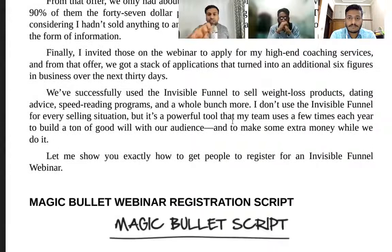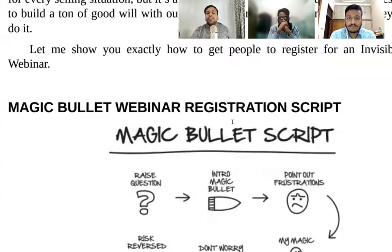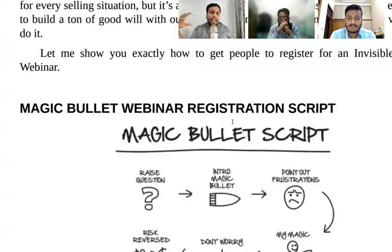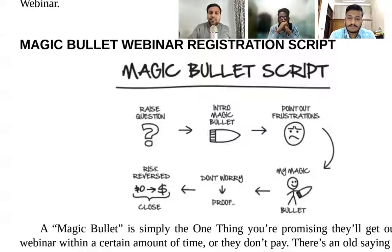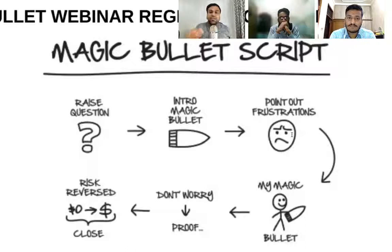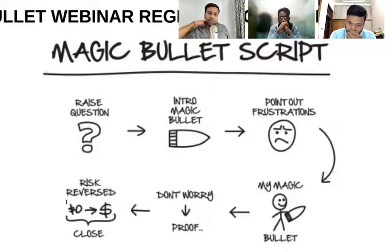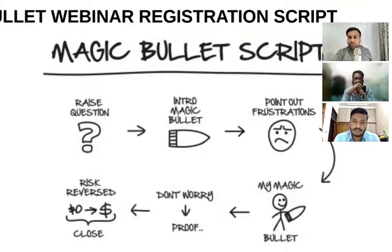Now we have the webinar registration script. In every funnel we've studied, there is a special script used. For this particular funnel, Russell Brunson uses the Magic Bullet Webinar Registration Script. The framework is: raise a question, introduce the magic bullet, point out frustrations, share your magic bullet, give social proof and testimonials, then risk reversal — there's no loss either way, it's totally your choice.